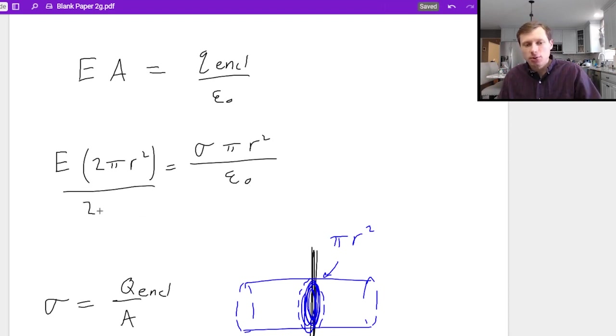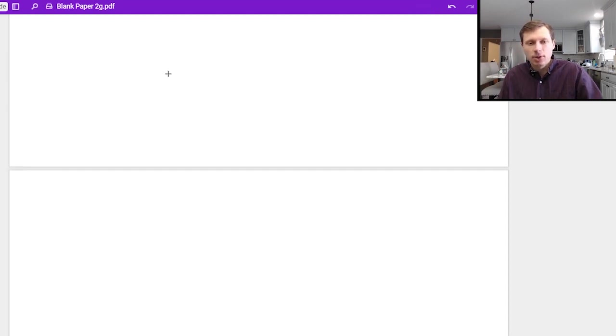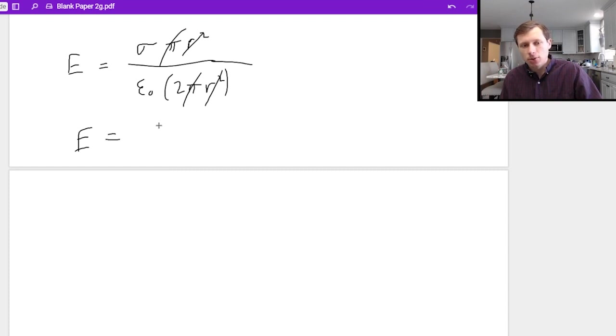Now to solve this all I need to do is divide both sides by 2 pi r squared. And when I do that I'll get a final answer of E equals sigma times pi r squared divided by epsilon naught times 2 pi r squared. And it looks like the pi and the r squared will both cancel and the electric field will be equal to sigma over 2 epsilon naught.